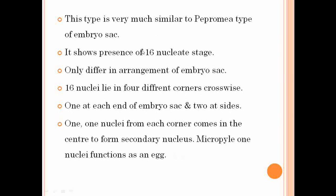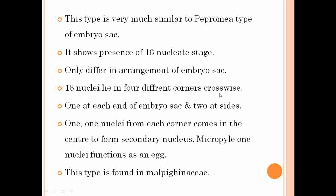The Penea type is very similar to the Peperomia type, with only a difference in the arrangement. This type is found in the family Malpighiaceae.